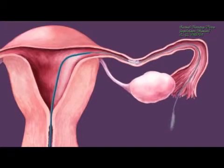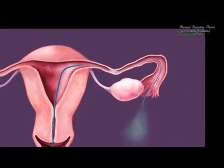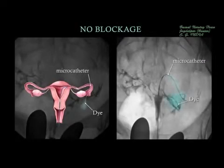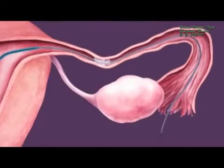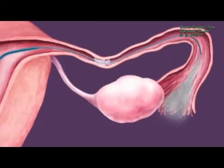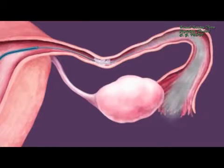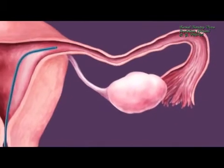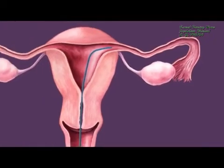Dye is sent through the micro catheter, and a new x-ray should show the dye flowing out the opened end of the fallopian tube. As the micro catheter is withdrawn, saline solution is pumped through it into the fallopian tube. The pressure of the saline solution will clear any remaining debris that caused the blockage, leaving behind an open tube.